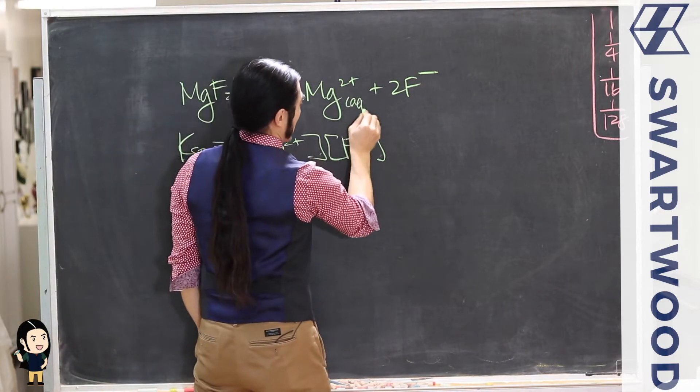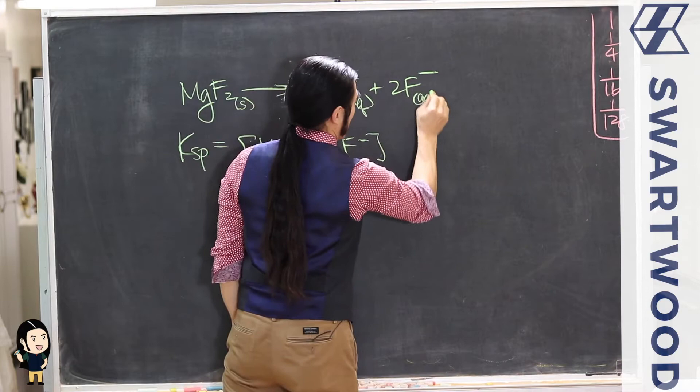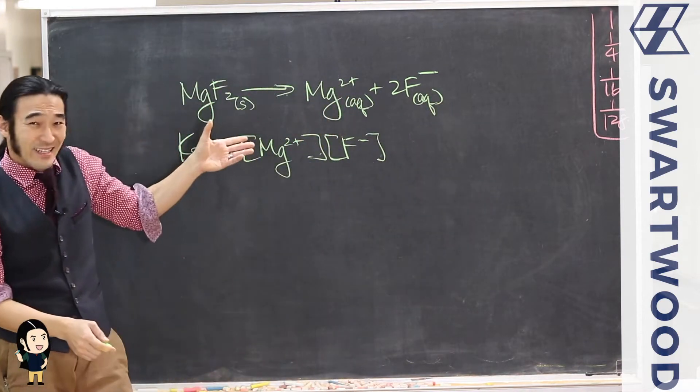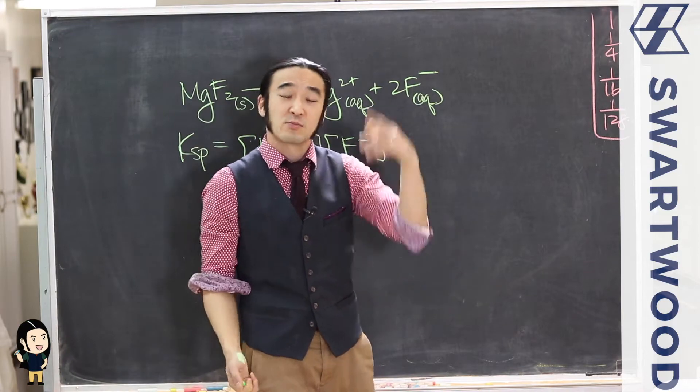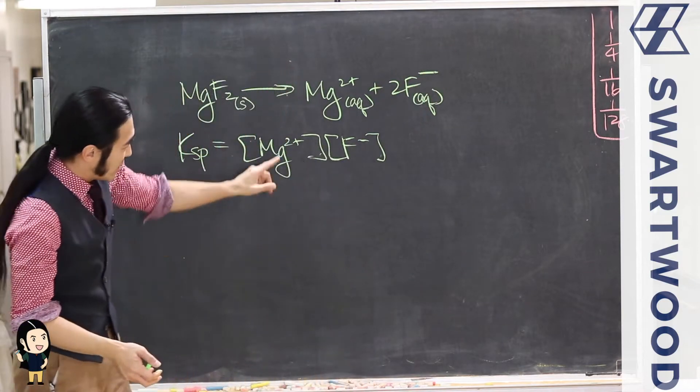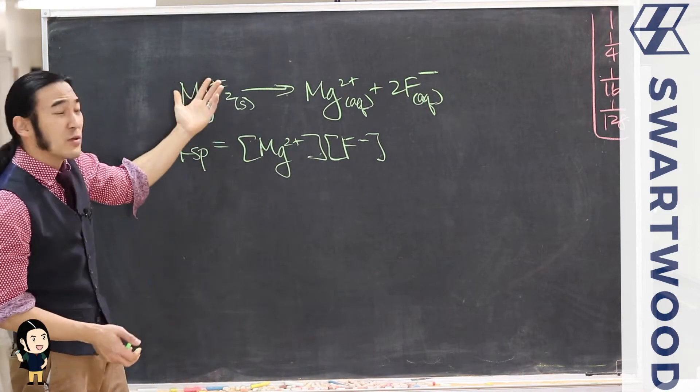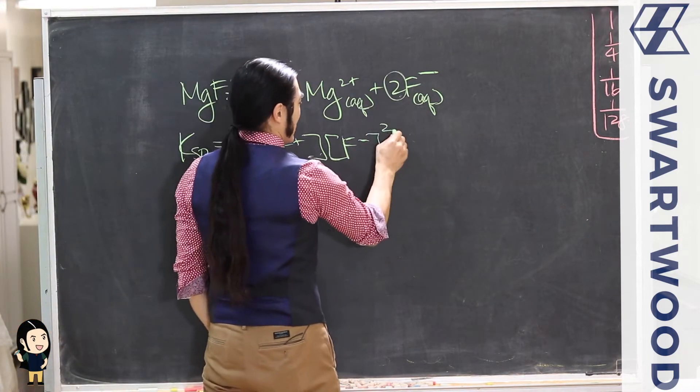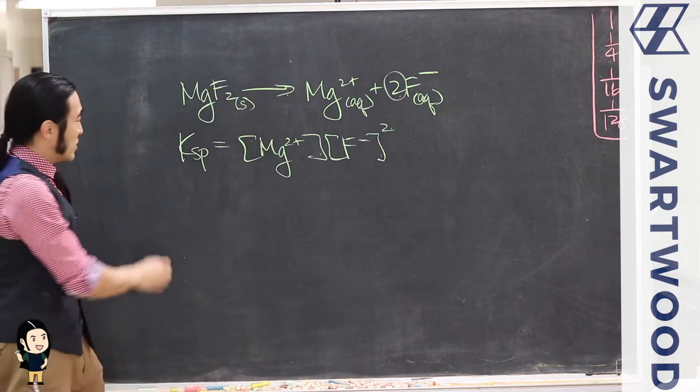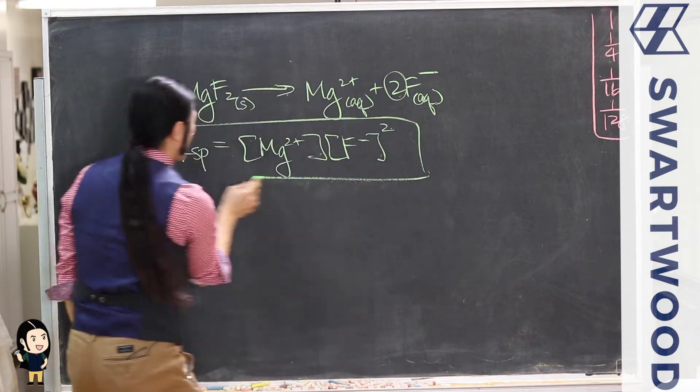So products over reactants. But here, this guy's a solid—she made that clear. And since that's the case, we won't count him. So you literally think of it like an equilibrium constant: it's products over reactants, where you've got the products here, the reactants—pure solids, pure liquids don't count. And don't forget that coefficient becomes a power.